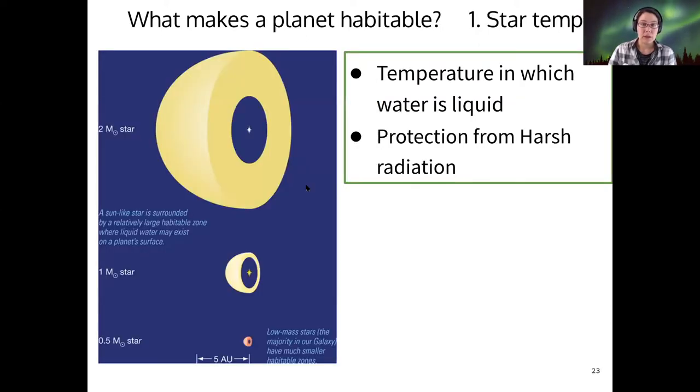All right, so the star temperature is the first and probably most important piece to figuring out this habitable zone. And we really want to meet these two criteria for a given planet. We want water to be liquid on the surface, so we want a star that's warm enough to provide for that in some region around it. But we also don't want too much harsh radiation.